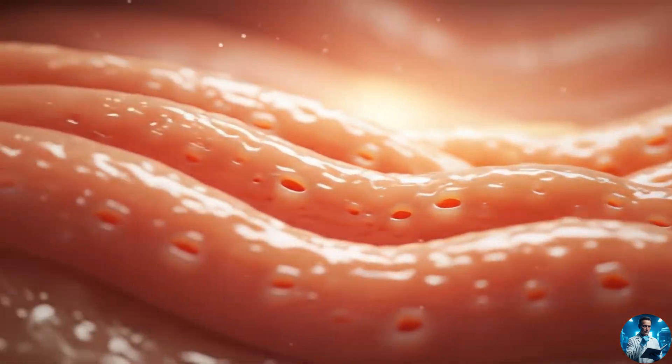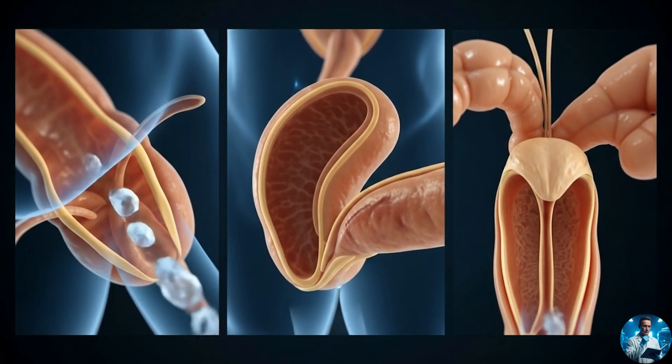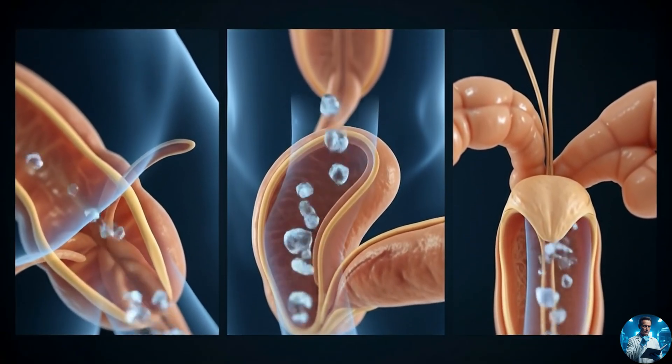Notice these tiny openings right here. These are the ducts of the Bartholin's glands that secrete lubrication into the vestibule.